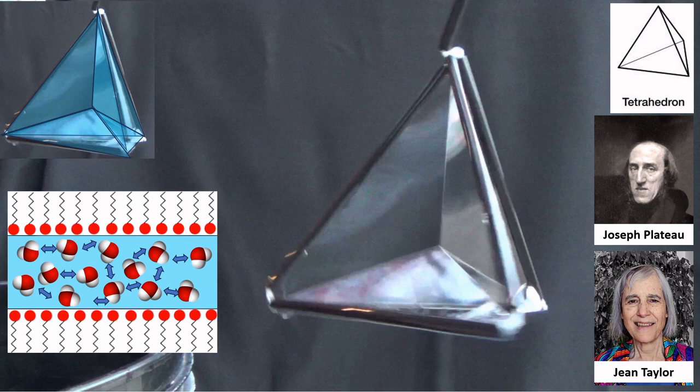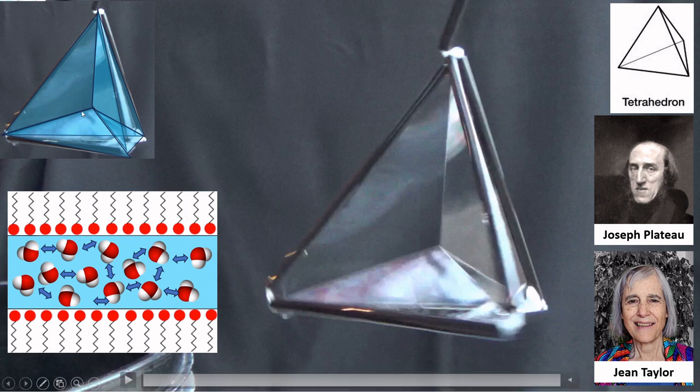That's true regardless of the shape, not just the tetrahedron, but all the other shapes we show you will follow those laws. Three films meeting at a border, and then four borders meeting at a vertex. No more.